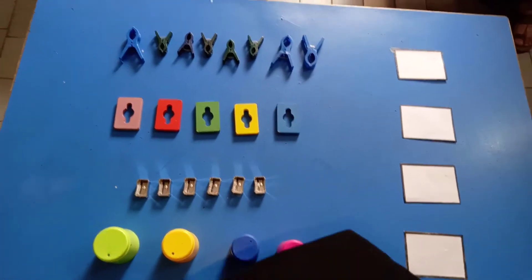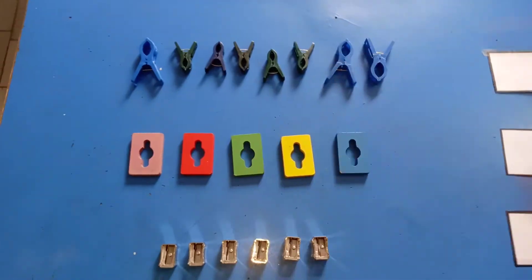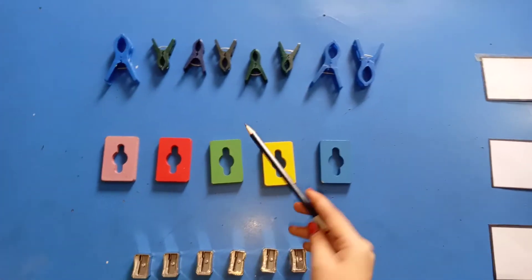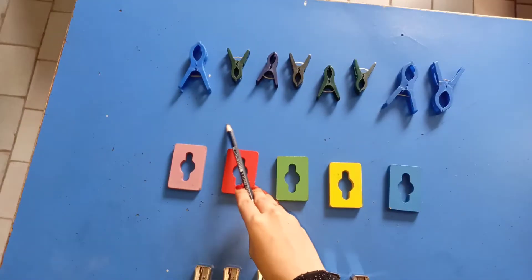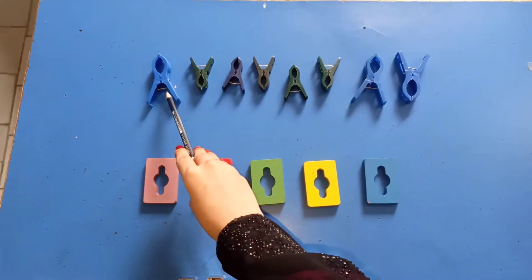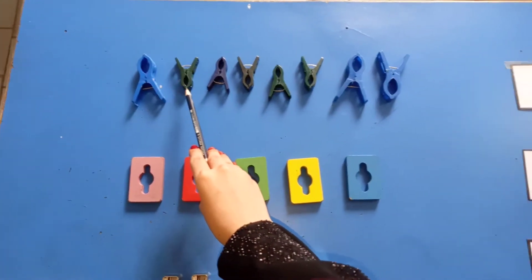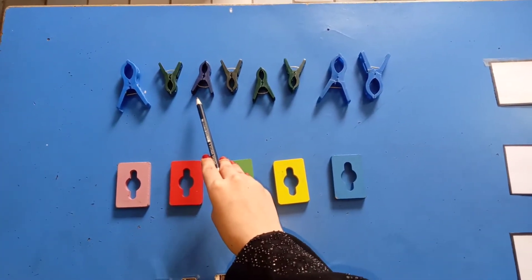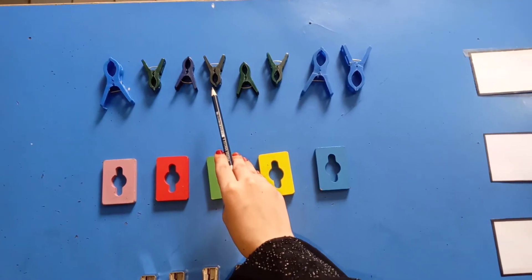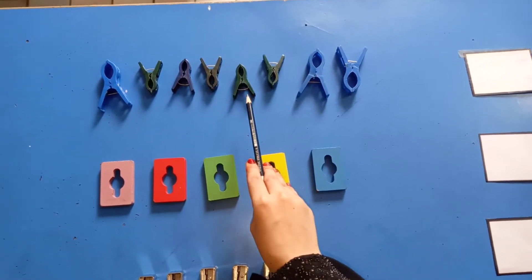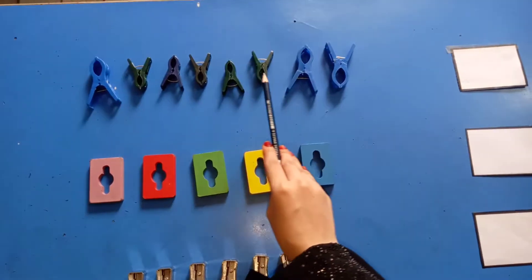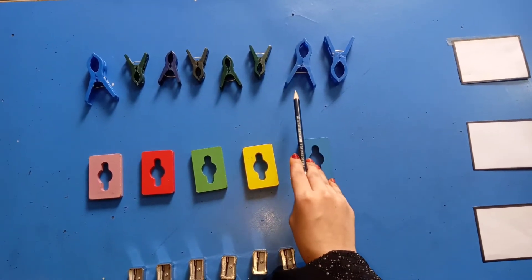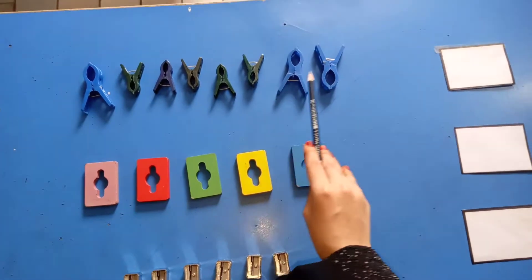Count with me. We start with pegs. Okay, start with me. One, two, three, four, five, six, seven, eight. Eight.